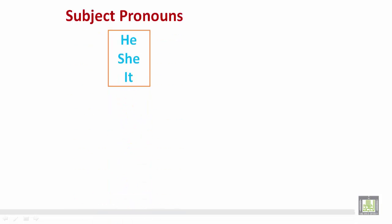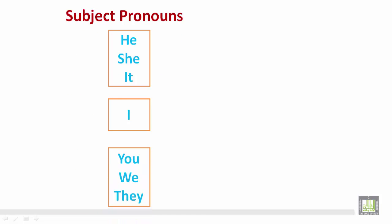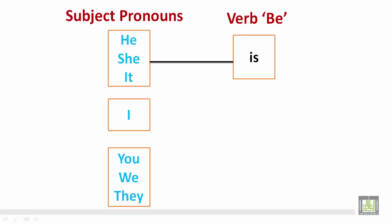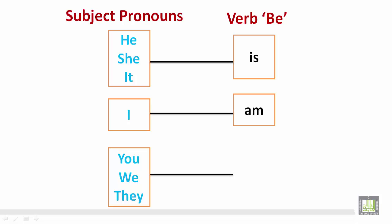We have subject pronouns such as he, she, and it; I; you; we; and they. He, she, and it usually correlate with the verb 'be' form 'is'. I am. We are. You are. They are.